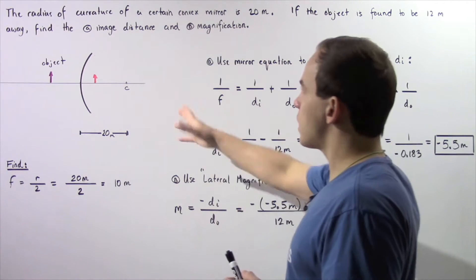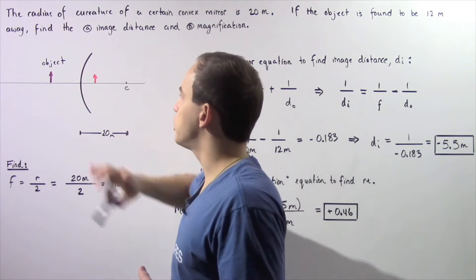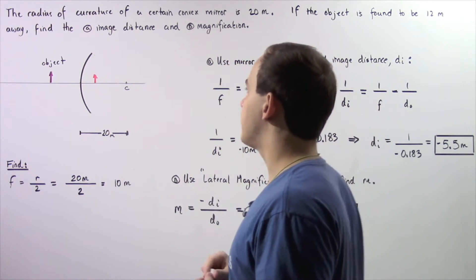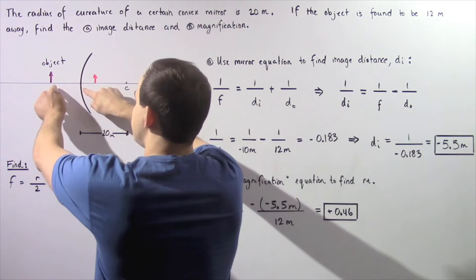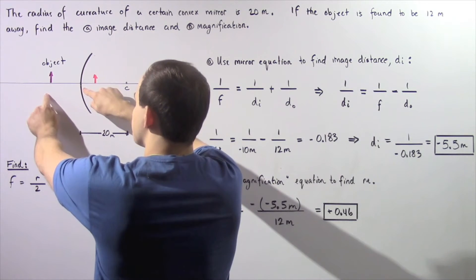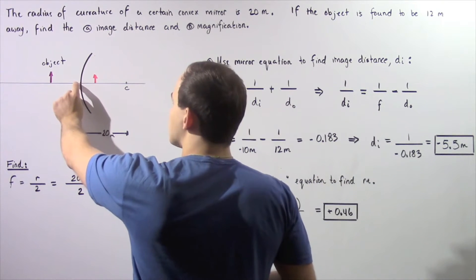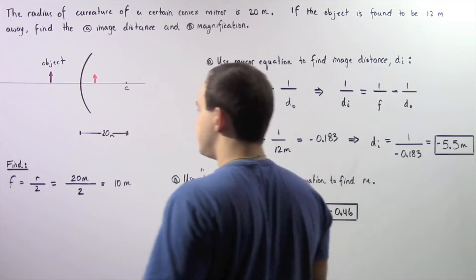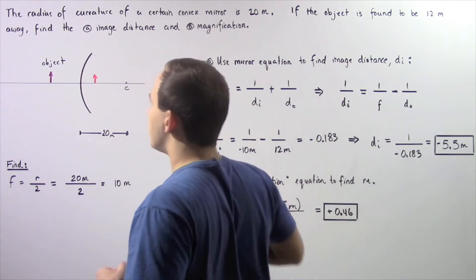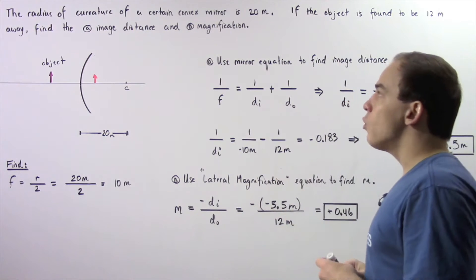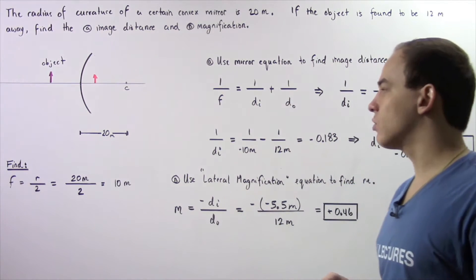Let's begin by describing our situation in the following diagram. Here we have our convex mirror and the object is found to the left of our convex mirror, a distance of 12 meters away. This distance from the center of the convex mirror to our object is 12 meters. The radius of curvature — the distance from the center of our convex mirror to point C — is given by 20 meters. We want to determine the distance from the center of our convex mirror to where our image is created, and also the lateral magnification of our image.